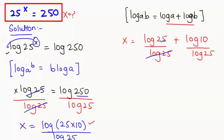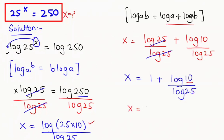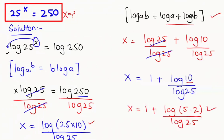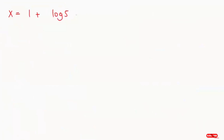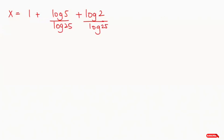So log of 25 and log of 25 get cancelled, and the next expression we get is x equals 1 plus log of 10 over log of 25. In the next step I'm going to split 10 as 5 times 2: x equals 1 plus log of 5 times 2 over log of 25. Again applying the product rule, x equals 1 plus log of 5 plus log of 2, and log of 25 is dividing with both numerator terms. Now I'm going to change 25 in the form of a power.